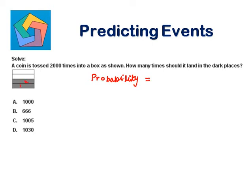Probability will be possible number of outcomes over the total number of outcomes. Possible outcomes are 2 here and the total are 1, 2, 3, 4. So 1 over 2, and how many times should it land in the dark places?